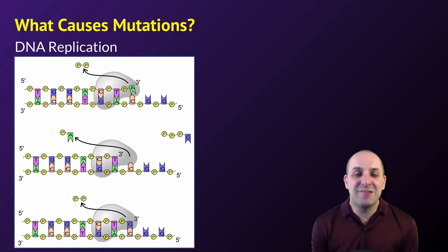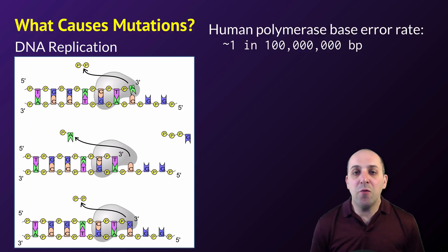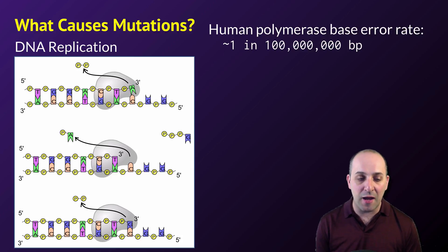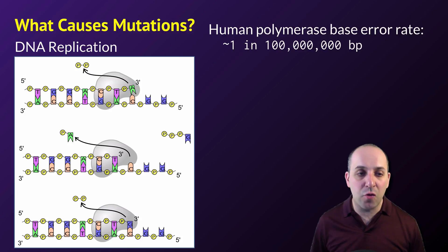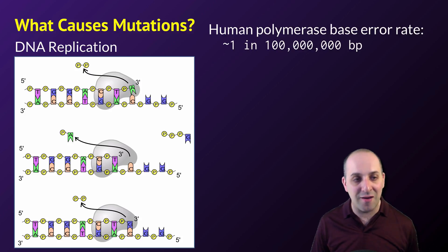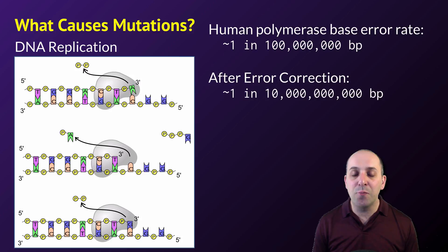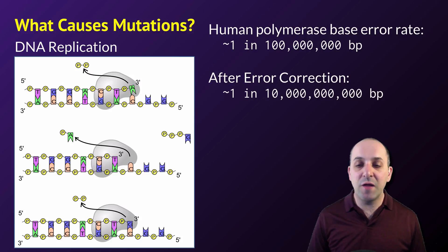But probably the biggest source of mutations is DNA replication itself. The error rate for human DNA polymerase is about one in every hundred million base pairs during its first pass through the genome. Polymerases do have an error-correcting mechanism — here this cartoon polymerase is replacing a mismatched adenine with a complementary guanine — which reduces the overall error rate to something like one in every 10 billion base pairs replicated.